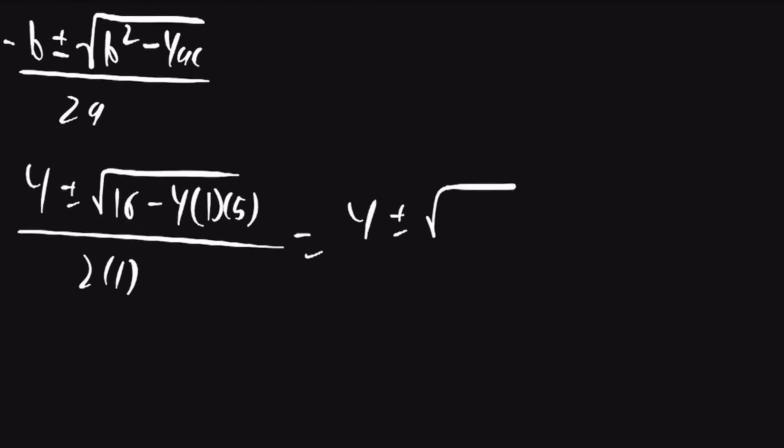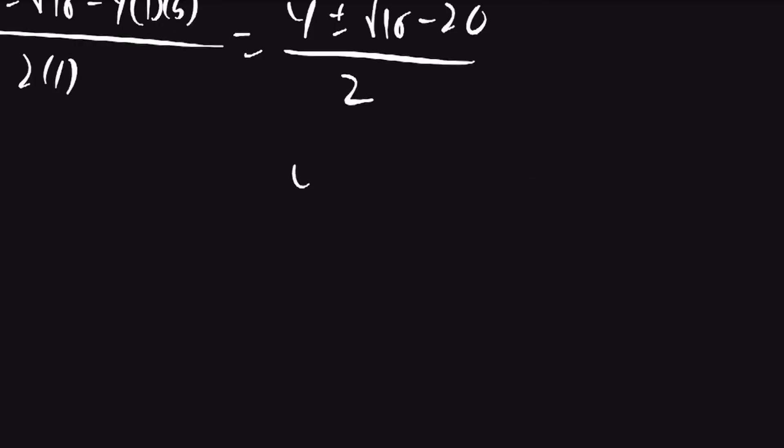This will be 4 plus or minus the square root of 16 minus 20 over 2. So it'll be 4 plus or minus the square root of negative 4 over 2, which will be 4 plus or minus 2i over 2.